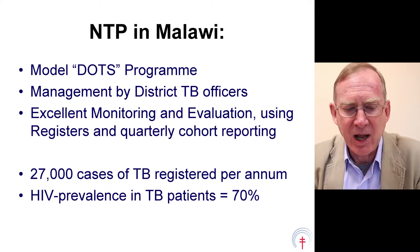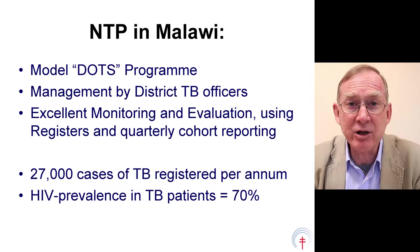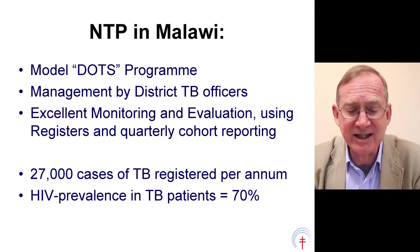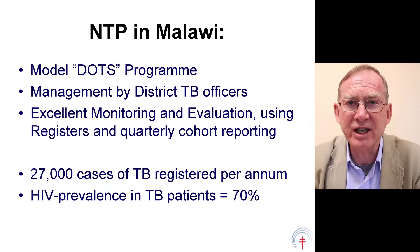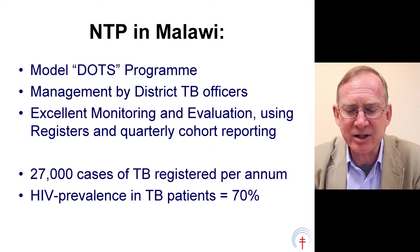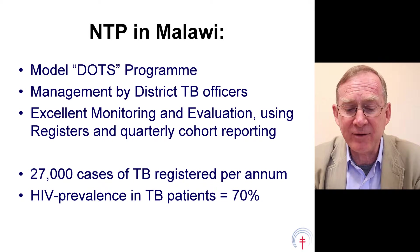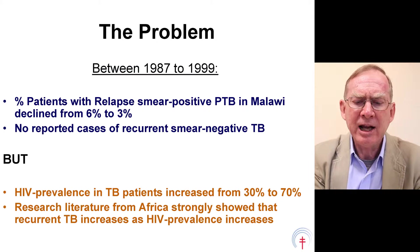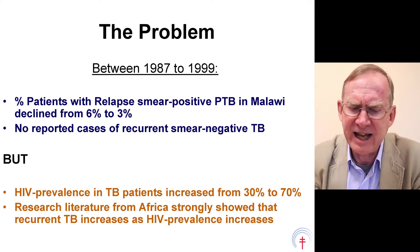A little bit of background. Malawi had a model DOTS programme, managed by district TB officers, with a very good monitoring and evaluation system using registers, treatment cards, and quarterly cohort reporting. About 27,000 TB cases were registered per annum at the height of the HIV/AIDS epidemic, and HIV prevalence in TB patients was about 70%. This was the problem we encountered and discussed around the table.